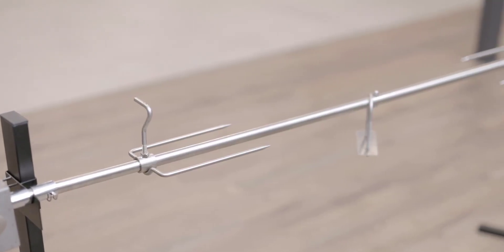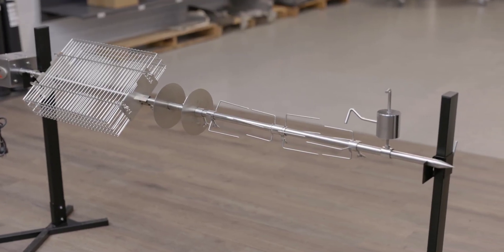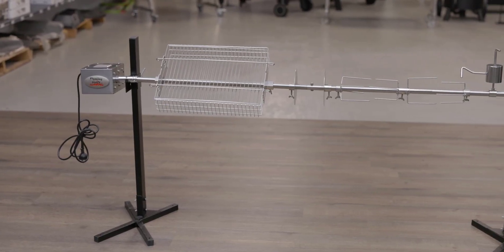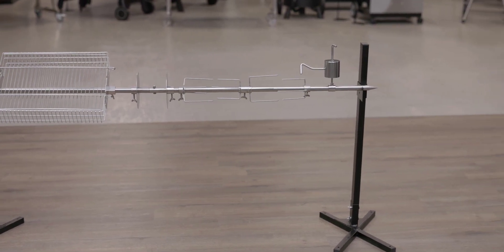The rotisserie skewer included with the Portable Camping Spit is 22mm round in diameter, and there are a range of optional extras available depending on what you're planning on cooking. Accessories include chicken prongs for cooking chickens and roasts, Euro discs for souvlaki-style shaved meat.